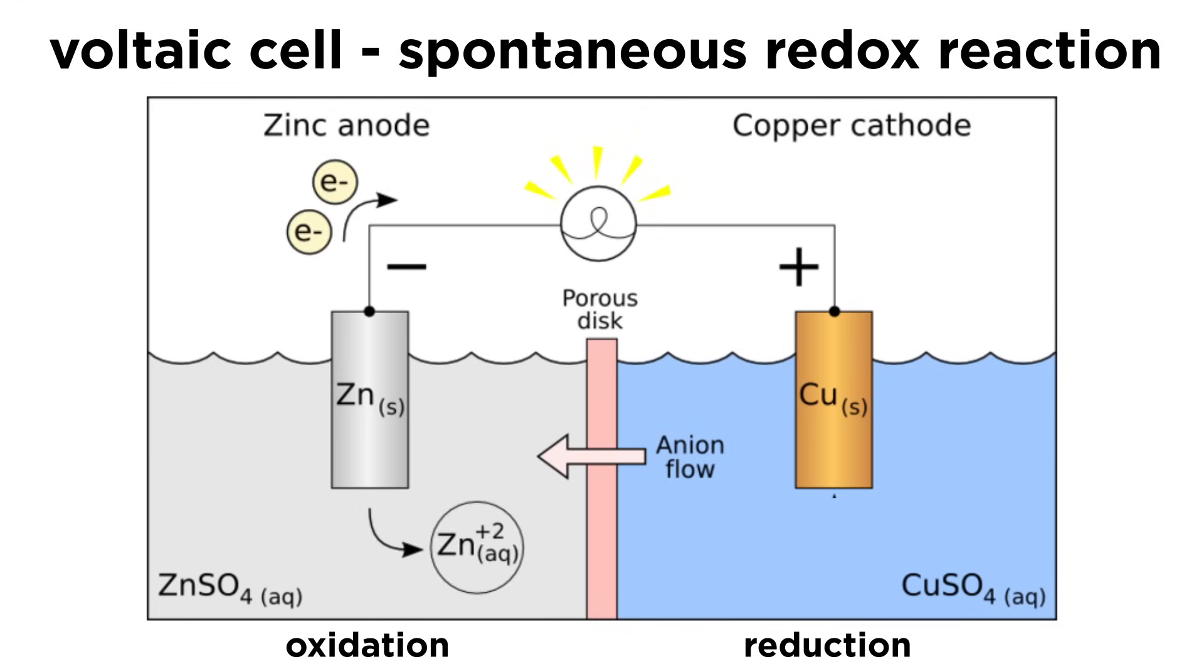At the anode, neutral zinc atoms give up two electrons to become zinc ions, which then fall off the electrode into solution. At the cathode, copper ions in solution near the electrode gain two electrons to neutralize and join the copper lattice. Ions in the salt bridge compensate for this gradual change in overall charge.